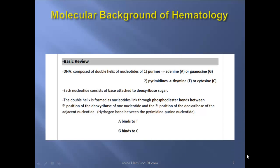Basic Review: DNA is composed of a double helix of nucleotides. Purines, which are adenine and guanosine, and pyrimidines, which are thymine and cytosine. Each nucleotide consists of a base attached to a deoxyribose sugar. The double helix is formed as nucleotides linked through phosphodiester bonds between the 5' position of the deoxyribose of one nucleotide and the 3' position of the deoxyribose of the adjacent nucleotide, with hydrogen bonds forming between the pyrimidine-purine nucleotides. A binds to T and G binds to C.